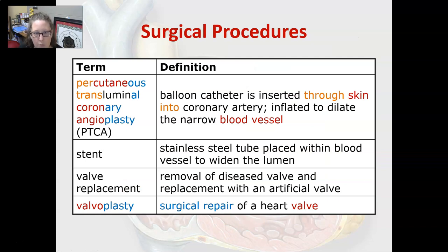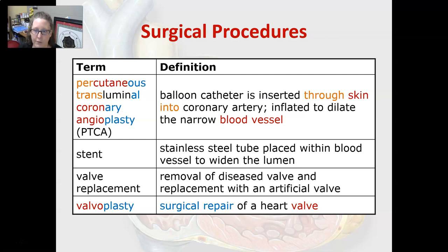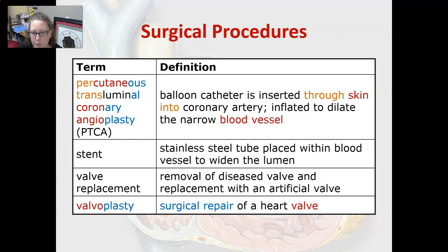Percutaneous transluminal coronary angioplasty, or PTCA: a balloon catheter is inserted through the skin into a coronary artery and inflated to dilate the narrowed blood vessel. A stent is a stainless steel tube placed within blood vessels to widen the lumen. A valve replacement is the removal of a diseased valve and replacement with an artificial valve. Valvoplasty is the surgical repair of a heart valve.